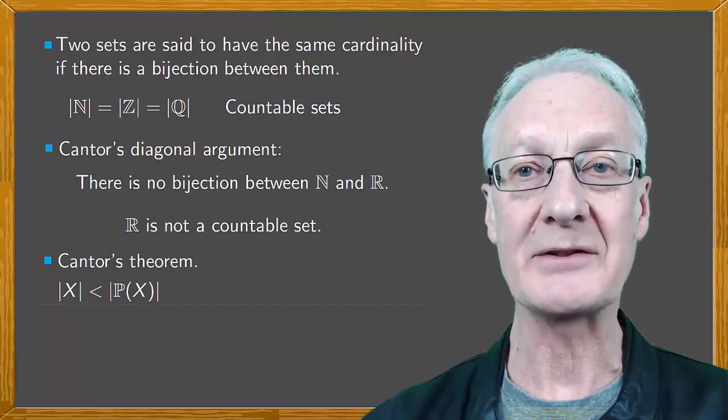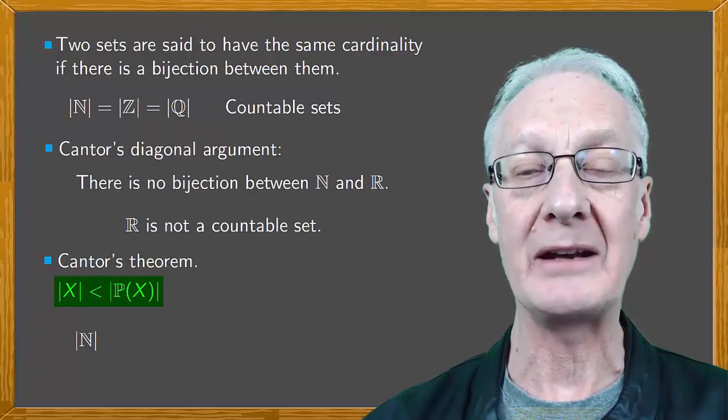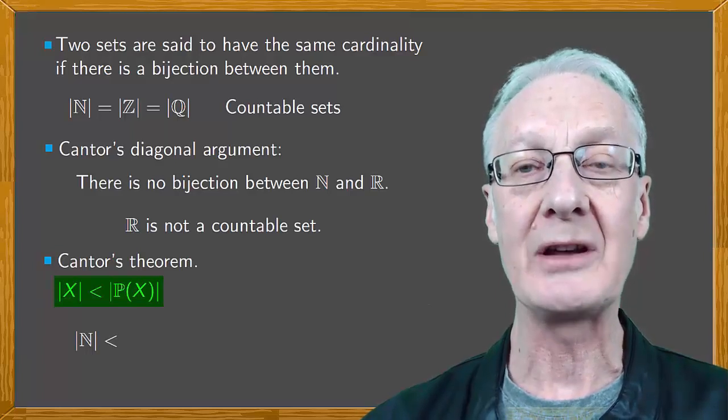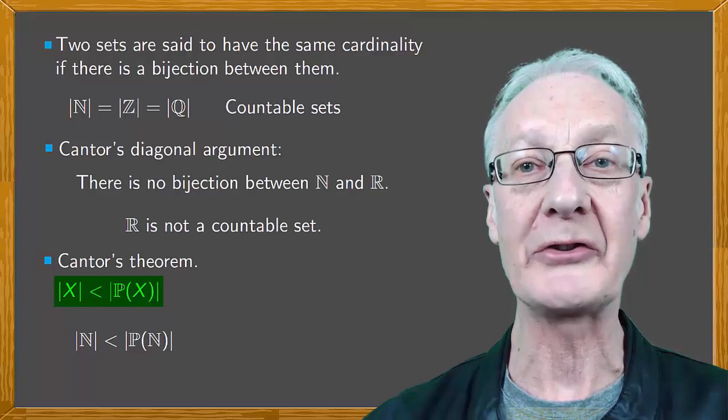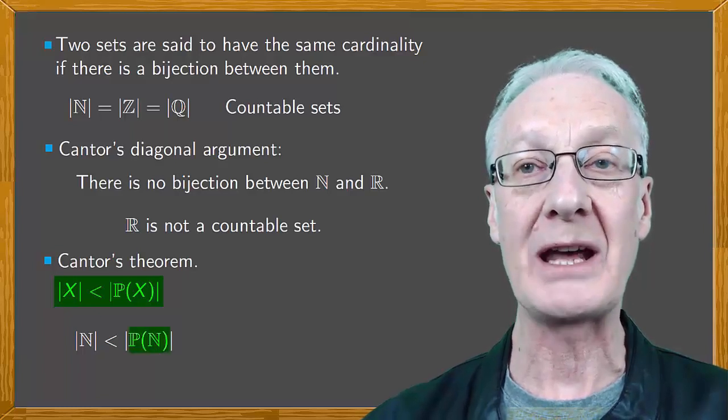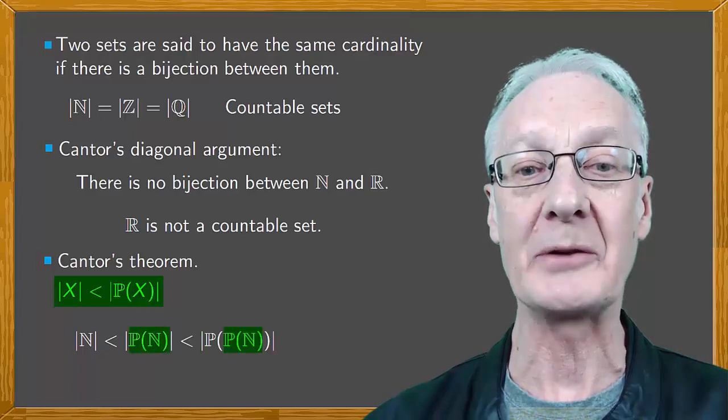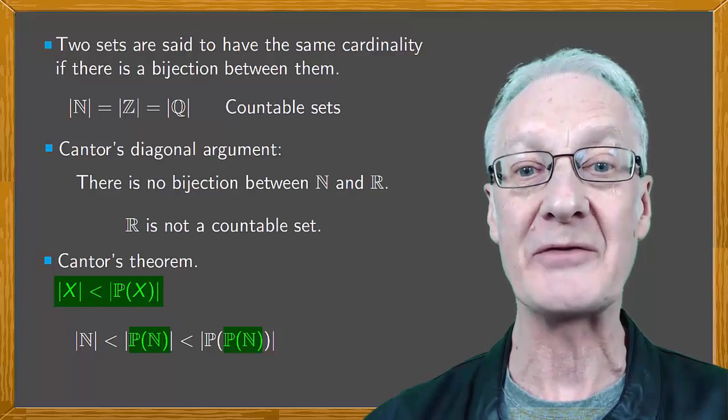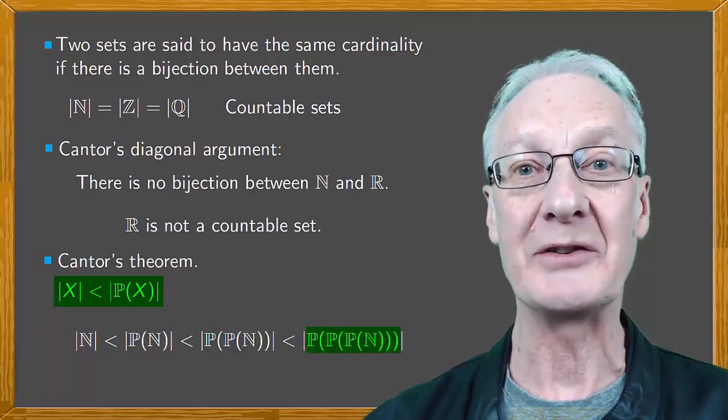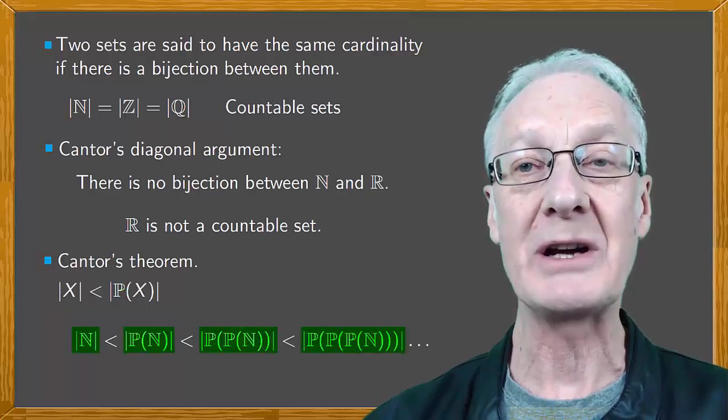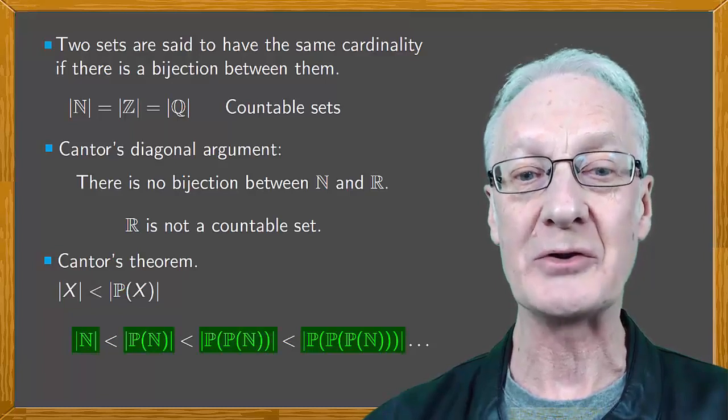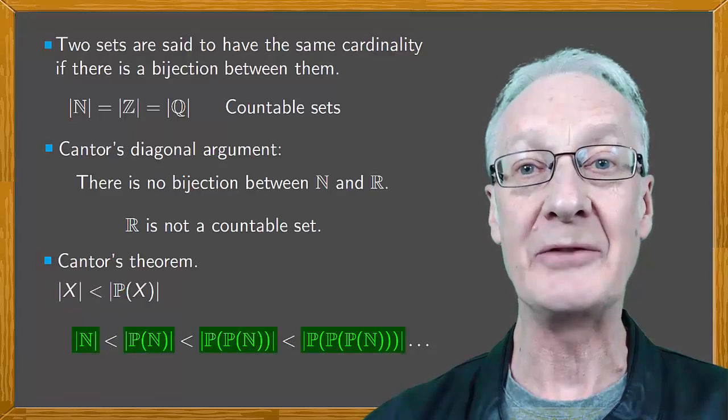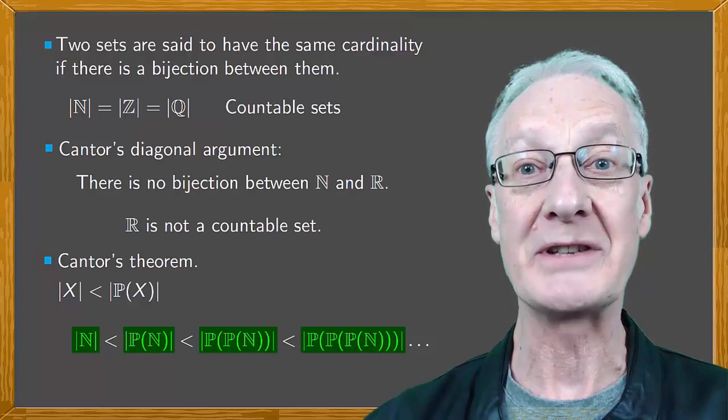Cantor's theorem indicates that the cardinality of N is strictly less than the cardinality of all the subsets of N, which is less than the cardinality of the subsets of the subsets of N, and so on without end. So that in this way we arrive at the conclusion that there is an infinity of distinct infinities.